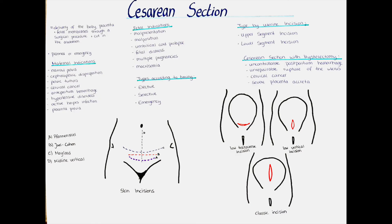The lower segment incision can be done either transversely or vertically, and is usually done in the presence of a deeply engaged head, a constriction ring, or lateral varicose veins. The patient is usually tilted 15 degrees to the left side to minimize aorto-caval compression and increase blood flow. In the lower segment cesarean section, the Pfannenstiel skin incision is the most common — a transverse suprapubic incision with better healing, less incidence of incisional hernia, and a better cosmetic outcome, though it is more time consuming, associated with more blood loss, and gives less room to work with during surgery.